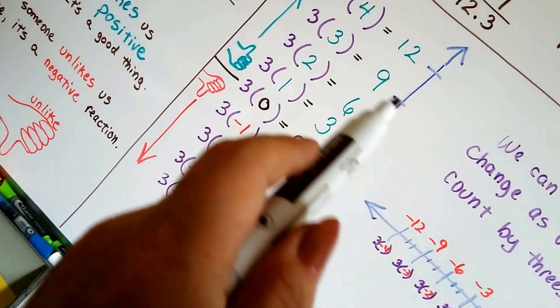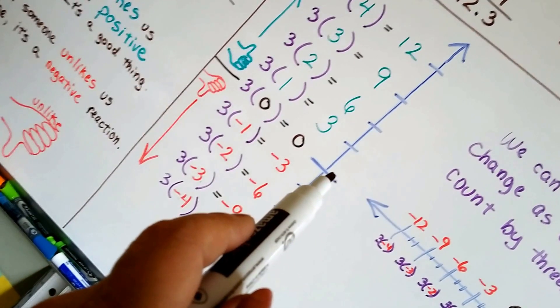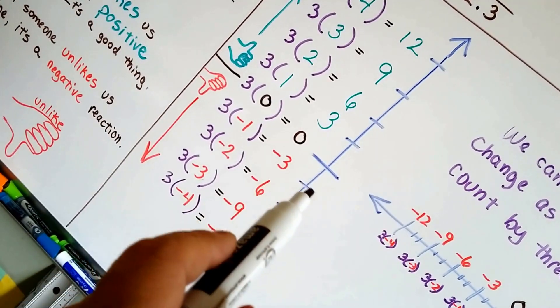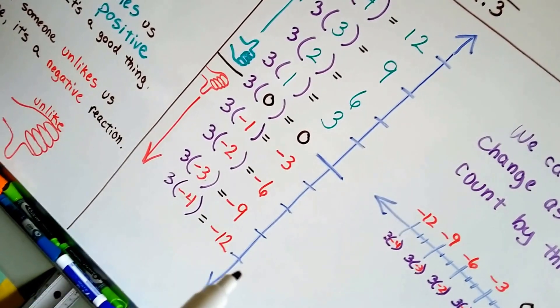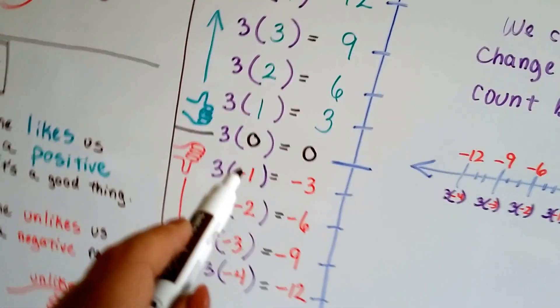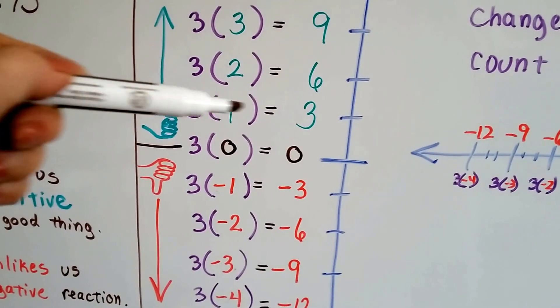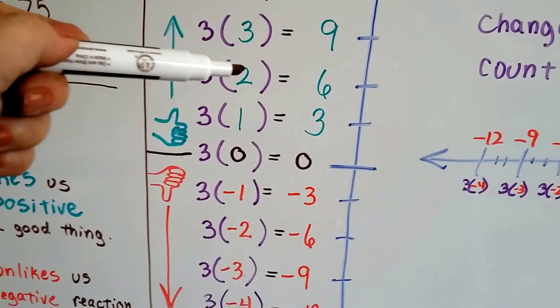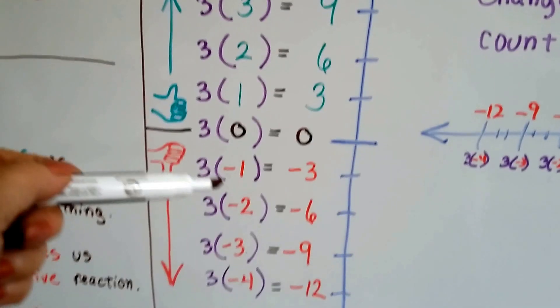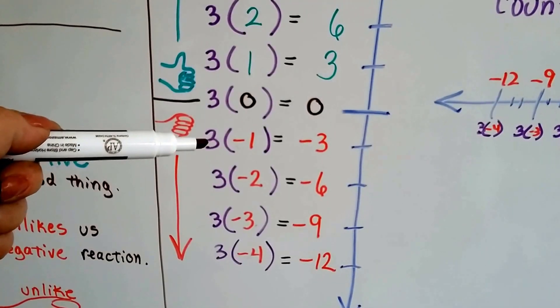And we can skip count by 3: 3, 6, 9, 12. We can skip count by 3 in the negatives: negative 3, negative 6, negative 9, negative 12. Well, if you look at this, 3 times 0 is 0. 3 times a positive 1 is a positive 3. Positive 3 times positive 2 is a positive 6. But look what happens when we multiply by negatives.